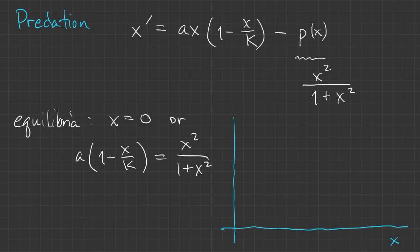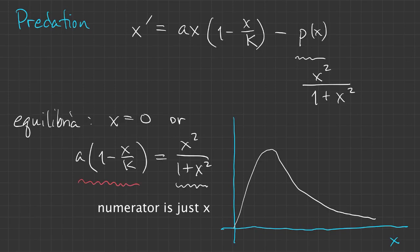The function on the right doesn't actually depend on any parameters. And it looks something like this. The function on the left is a linear function that decreases from a to zero at K. So there might be just one intersection of these two. Or, depending on K, if it's larger, there could be three intersections.